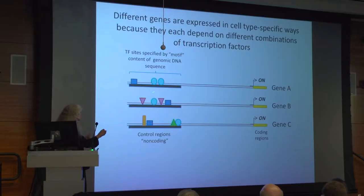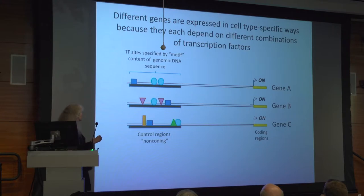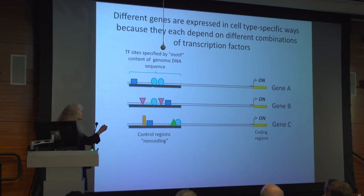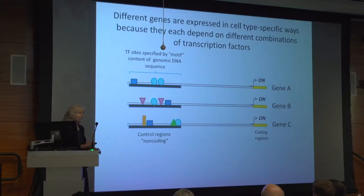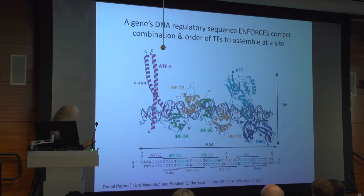For example, if you have two cell types which both express the light blue and dark blue transcription factors, but one expresses the pink transcription factor and the other expresses yellow and green but not pink, you're going to see gene A expressed in both cell types, but gene B only in one cell type and gene C only in the other. If you knock out the light blue transcription factor, you may lose expression of all three, but that doesn't make them all regulated the same way. The logic is combinatorial, and this is how we manage to live with a finite number of genes.